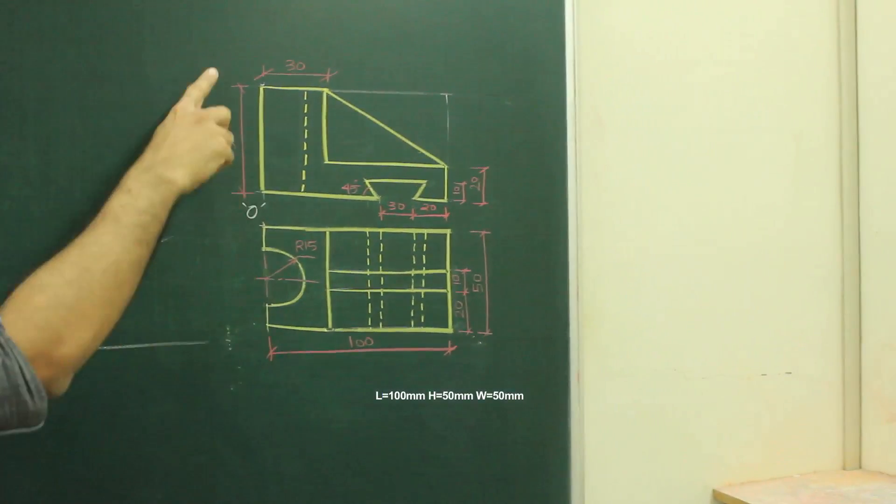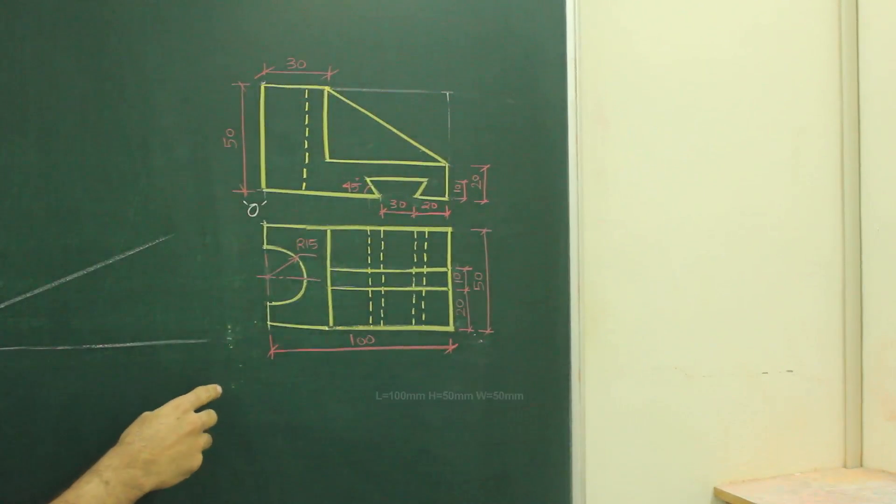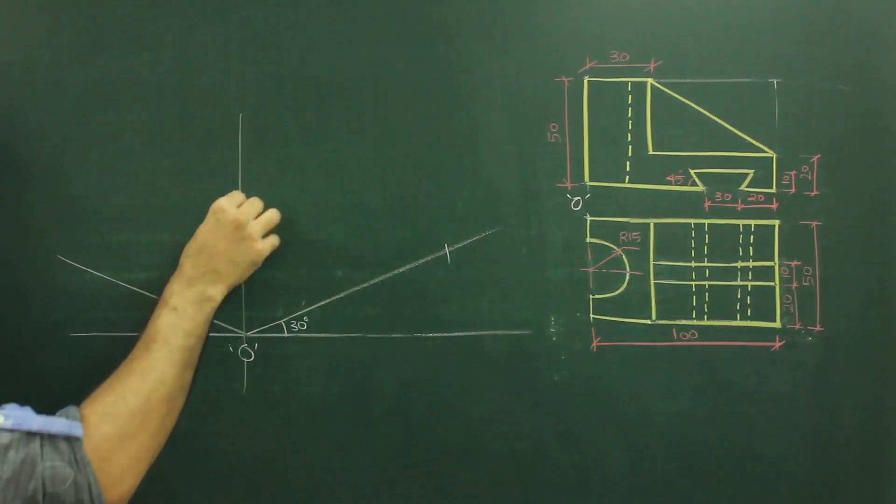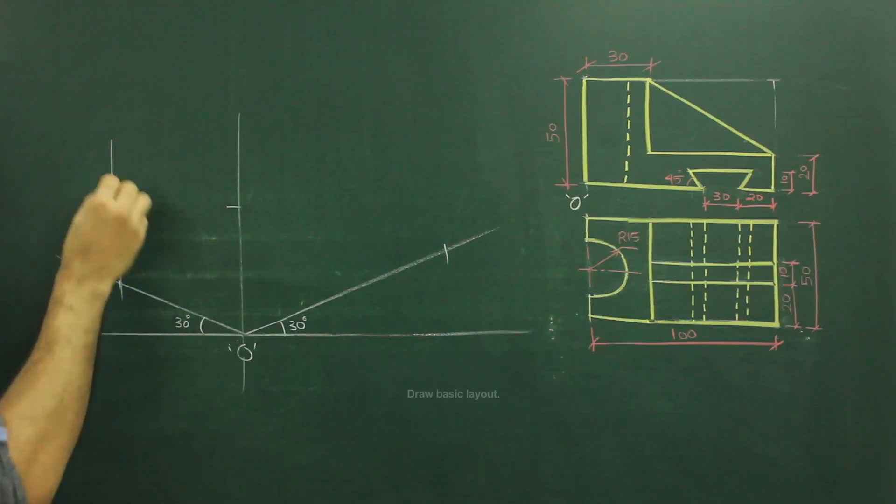In this sum, length is 100, height is 50 and width is 50. So first, we will draw length, width and height. So first, we'll mark 100, 50, 50 and we'll draw layout.